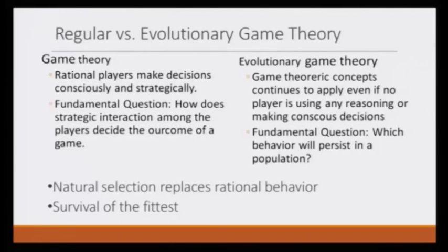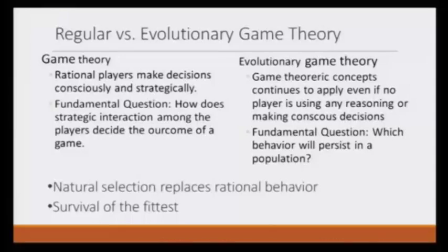The fundamental question in regular game theory is how strategic interaction among players decides the outcome of a game. The fundamental question in evolutionary game theory is: which behavior will persist in a population? If a particular behavior leads to better fitness, that gene gets better reproductive success and spreads in the population. Here, natural selection replaces rational behavior.